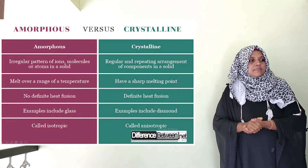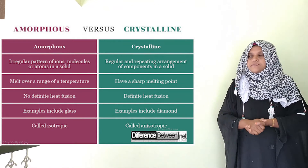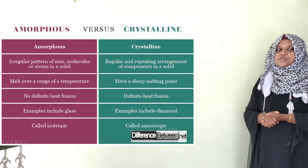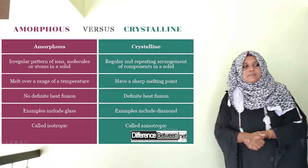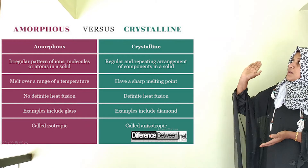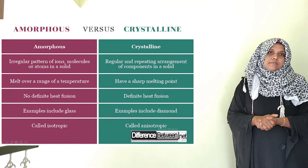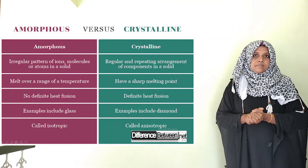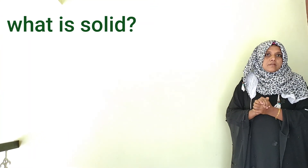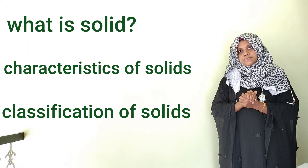To summarize the differences: amorphous solids melt over a range of temperature, while crystalline solids have a sharp melting point. Amorphous solids have no definite heat of fusion, while crystalline solids do. An example of an amorphous solid is glass; an example of a crystalline solid is diamond. Amorphous solids are isotropic; crystalline solids are anisotropic. These are the key characteristics and classification of solids.